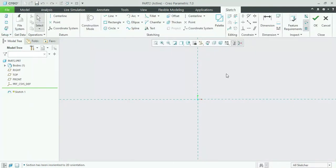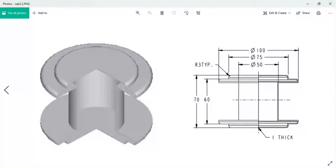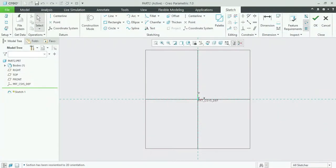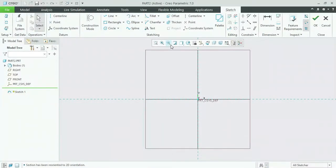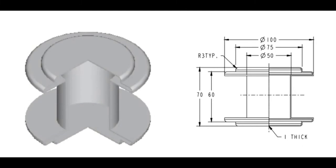In this video I will be modeling the following diagram. First we select the front plane and start sketching. We will see the dimensions of this body: 50, 70, and 100. We will not make the whole body — it will be a half body — so 50, 75, and 100. We will make these three things.